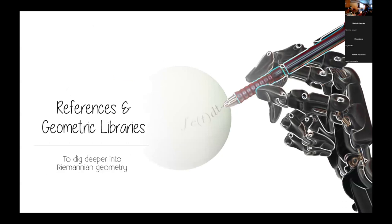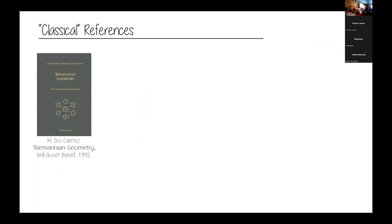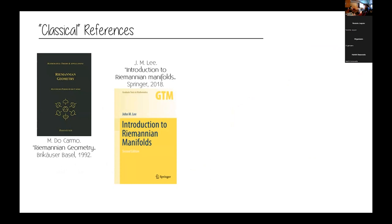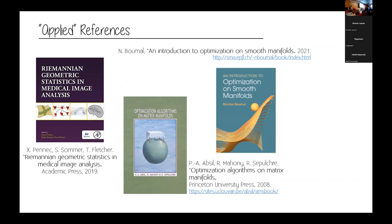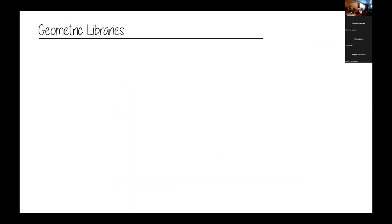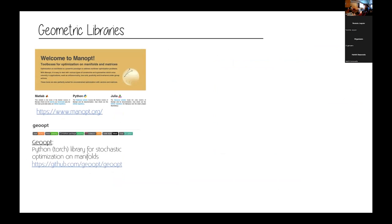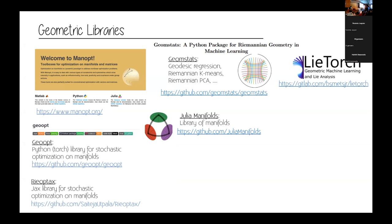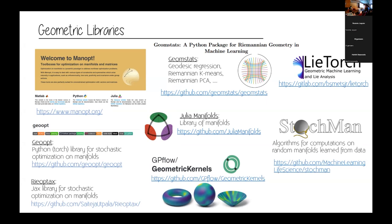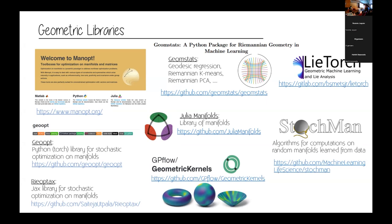Let me quickly give you some references — the slides will be available later so you can check these more deeply. There are classical mathematical references, more applied references on statistics and optimization, and the book we used for some of the illustrations. For geometric libraries: Manopt for optimization, Geoopt and Riemannian-SGD for stochastic optimization on manifolds, Geomstats for statistics on manifolds, Manifolds.jl in Julia for all manifold operations, LieTorch for Lie groups, Geometric Kernels for kernels on manifolds, and StochMan for computation on manifolds learned from data. Thank you for your attention — I'm happy to take questions.